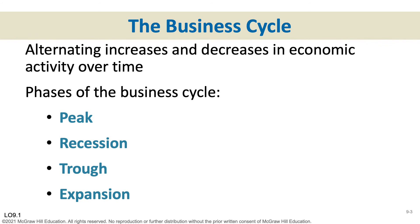The business cycle is just the ups and downs the economy goes through. We have four phases: the peak is the temporary maximum where everything's going great. Inevitably, we slide down into a recession, defined as two consecutive quarters of decline in GDP — though other economists may label a recession even before that six-month mark. When output declines, people get laid off. We hit bottom at the trough, then head into the expansionary phase where more GDP is produced and more jobs are created.